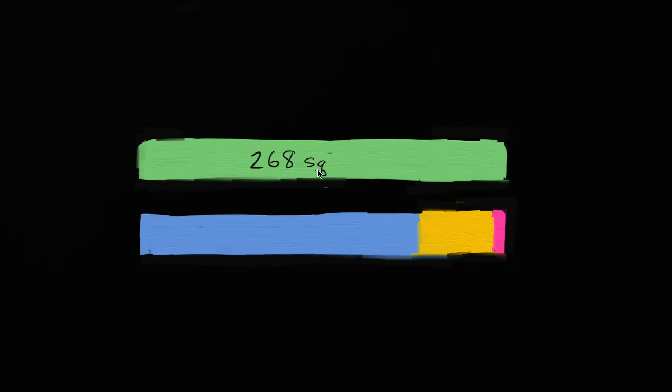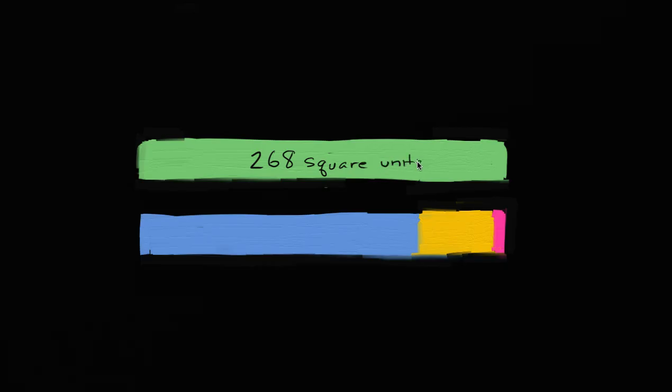Let's say that this green rectangle right over here had an area of 268 square units, whatever those units are. You could imagine them being square centimeters, or if you imagine this being a big field that you're looking at from space, it could be square miles or something. So I'm just gonna write square units.